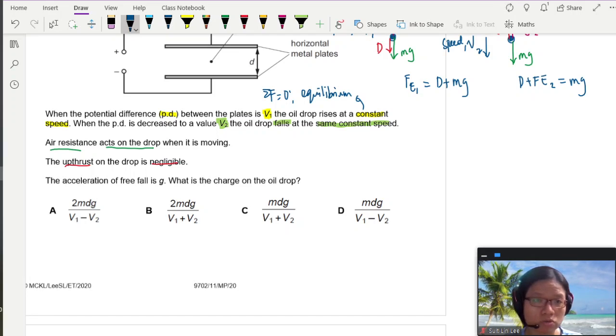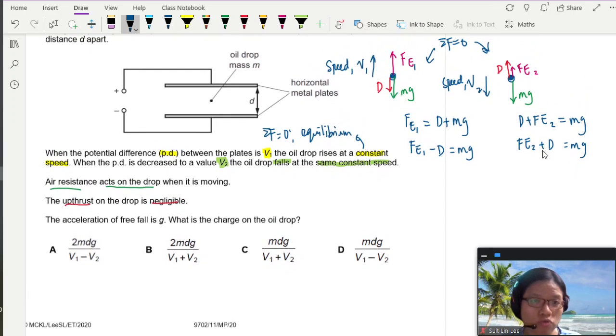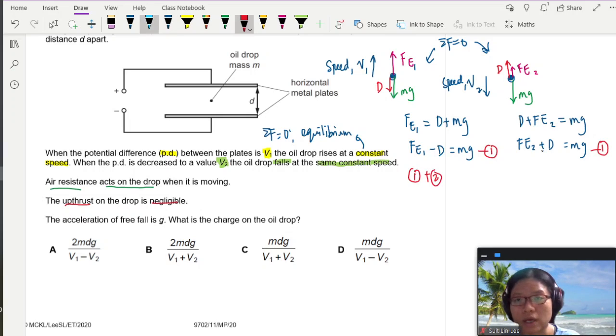So a few ways to do this. Maybe I'll just rearrange this. I get Fe1 minus D is equal to mg. And this one, Fe2 plus D is equal to mg. Sum of the up force is equal to the sum of the down forces. Alright. So can I take equation 1 and equation 2 and maybe add them so that D will cancel off? So I will take equation 1 plus equation 2.